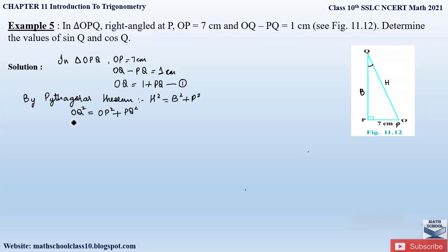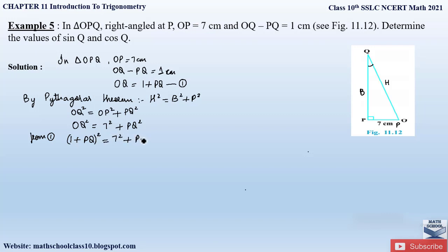Let us substitute: OQ squared is equal to OP squared plus PQ squared. We don't know the value of OQ, and OP squared is 7 squared plus PQ squared. We also don't know the value of PQ squared, so we write it as is. Instead of OQ, we can write 1 plus PQ from equation 1, so: (1 + PQ)² equals 7² plus PQ².